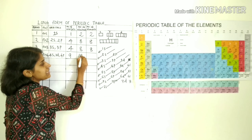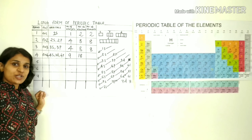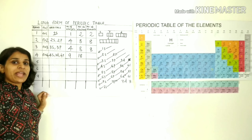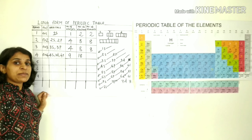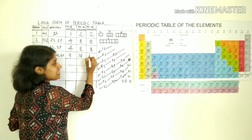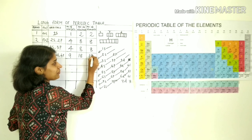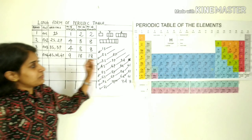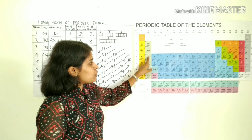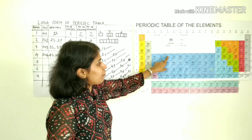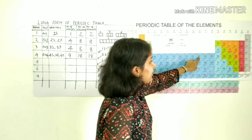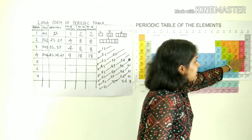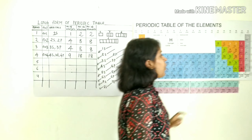With 9 orbitals, the maximum number of electrons is 9 × 2 = 18. Therefore, the fourth period contains 18 elements.